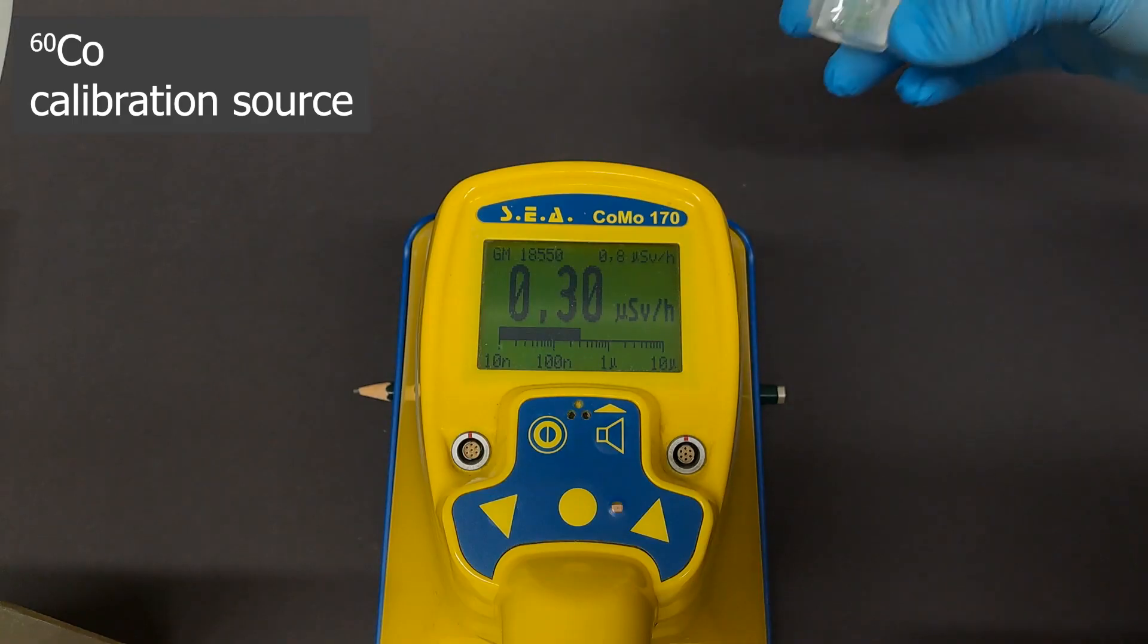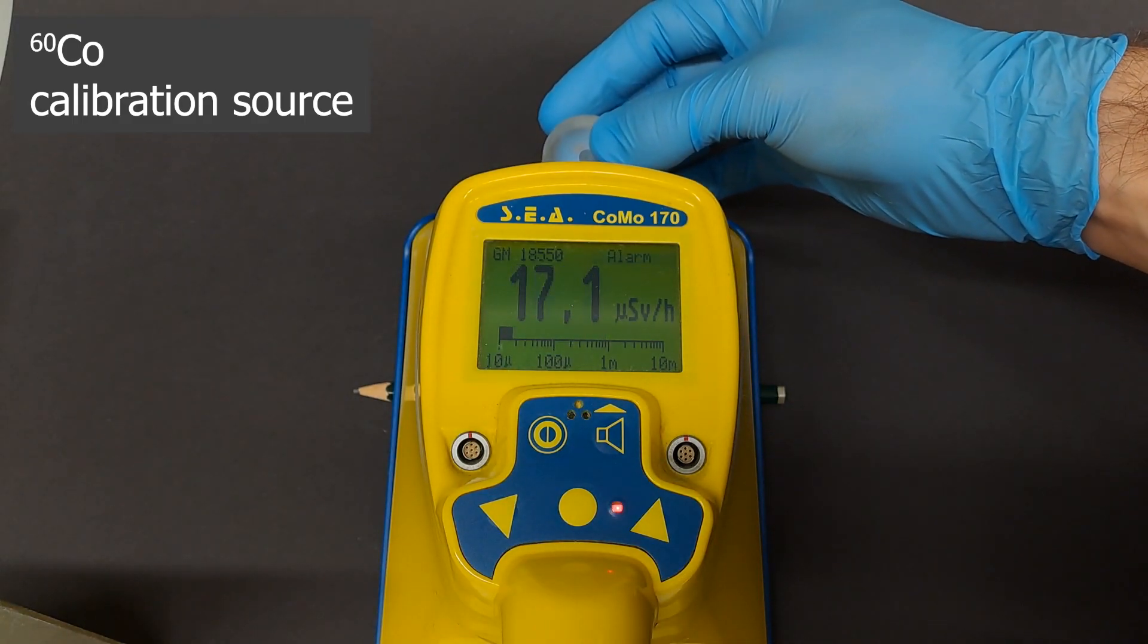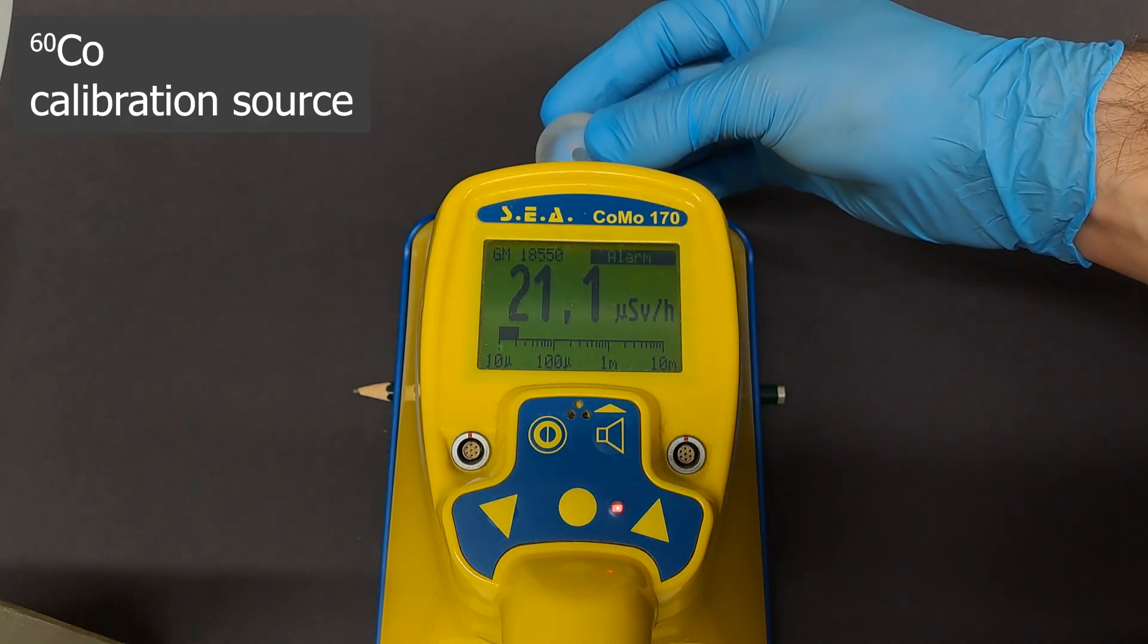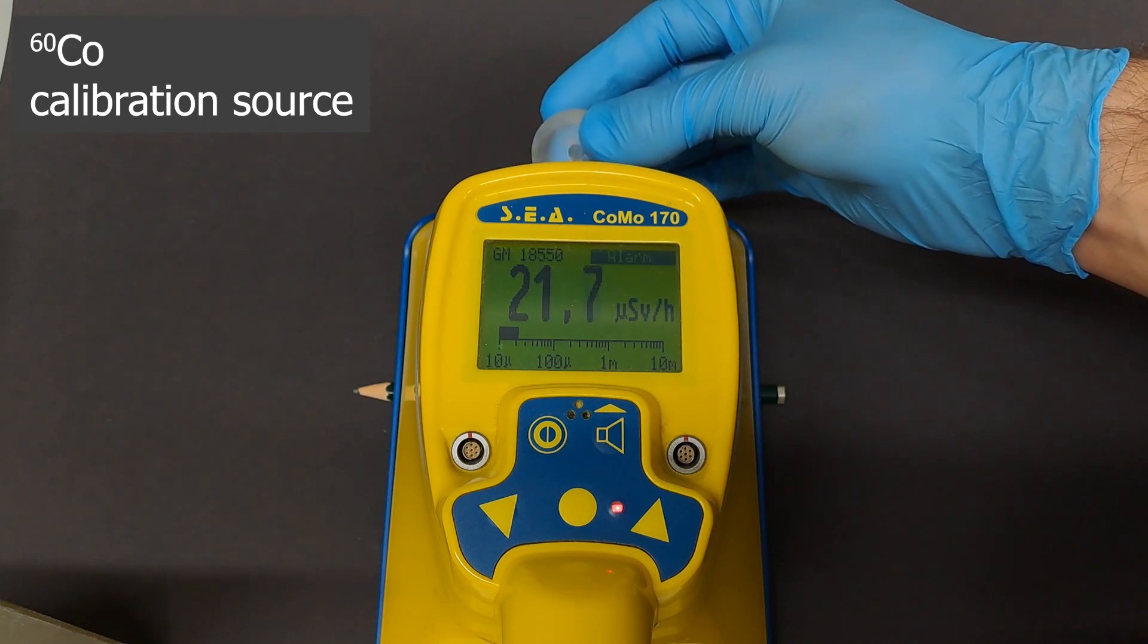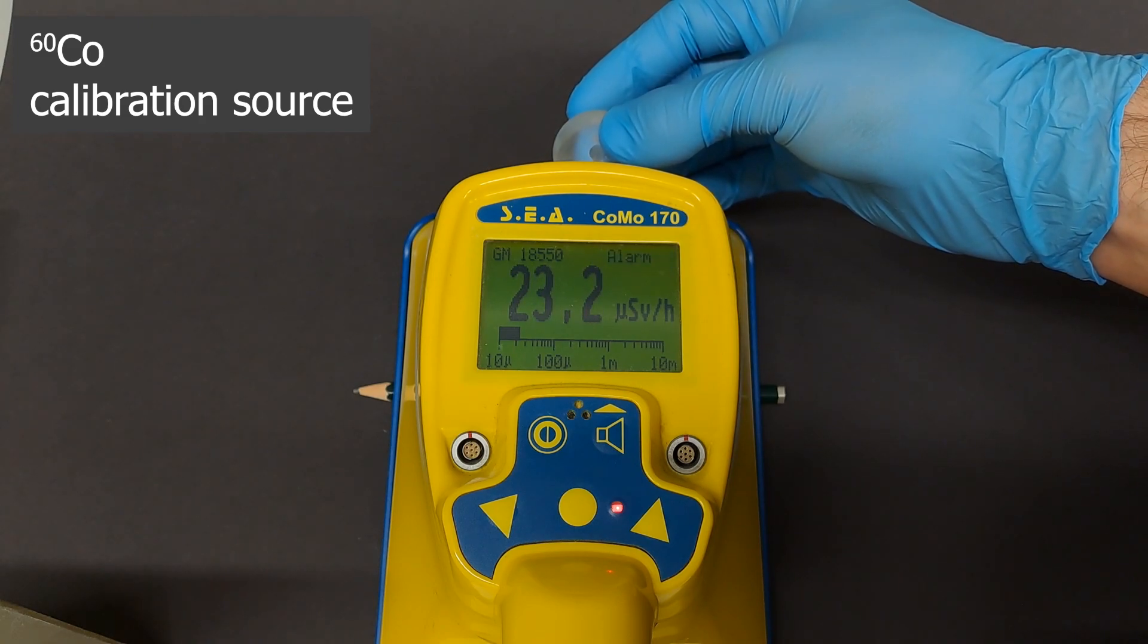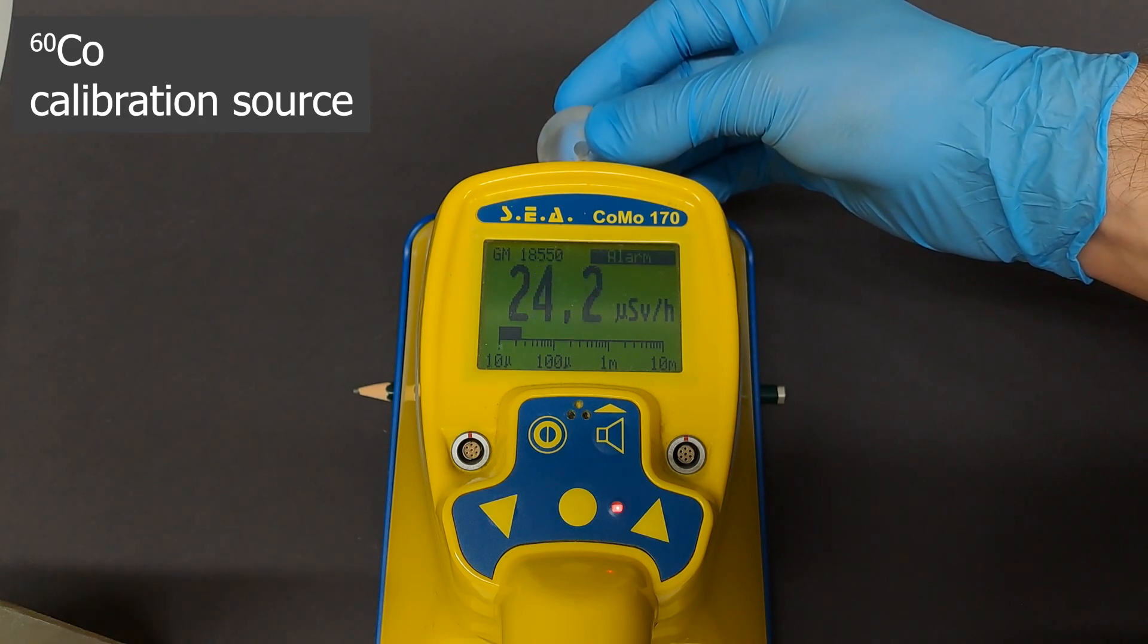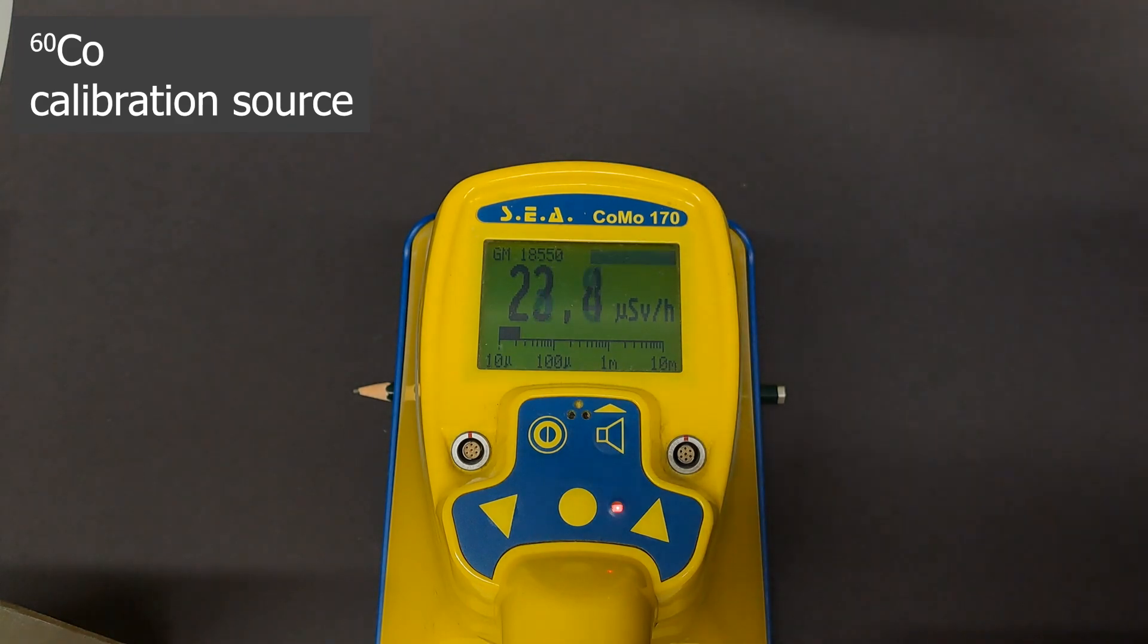To start, let's use the Cobalt-60 sample. To make a somewhat fair comparison, shielded gamma samples are used since the Hobbit device cannot measure alphas. This means we can only measure the dose rate coming from beta and gamma radiation. The peak value here is 24.6 microsieverts an hour on contact.